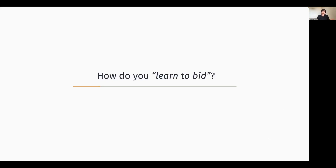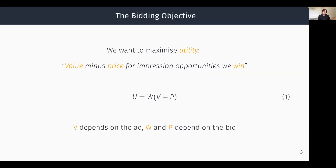So how do you actually learn to bid? First we need to agree on an objective, and the objective we will focus on is utility. We define this as the value we get from showing ads minus the price we need to pay for them, which is also called surplus. We only obtain value or pay a price for auction rounds that we win. The value depends on the ads we show, whereas the winning probability and price depend on the bids we place.